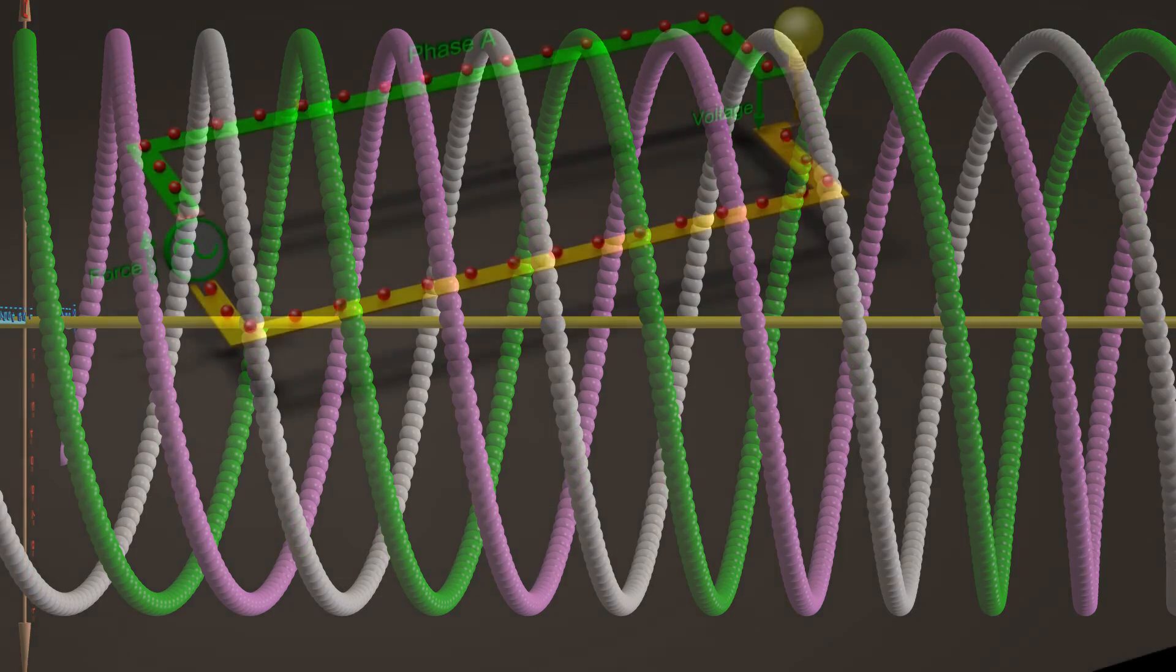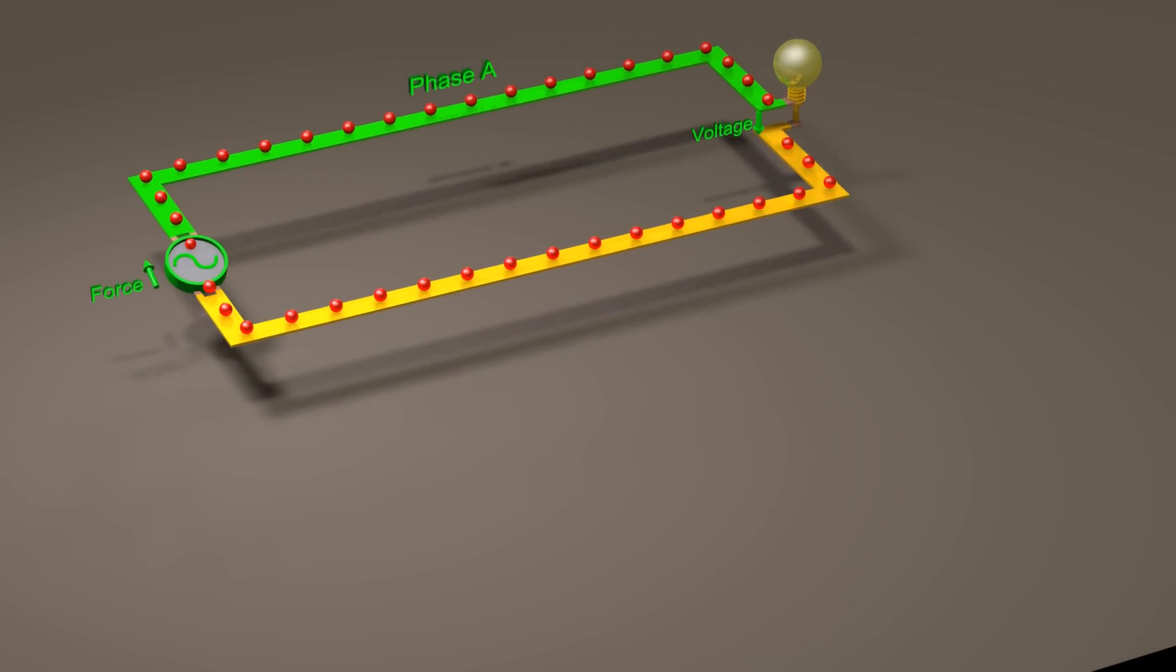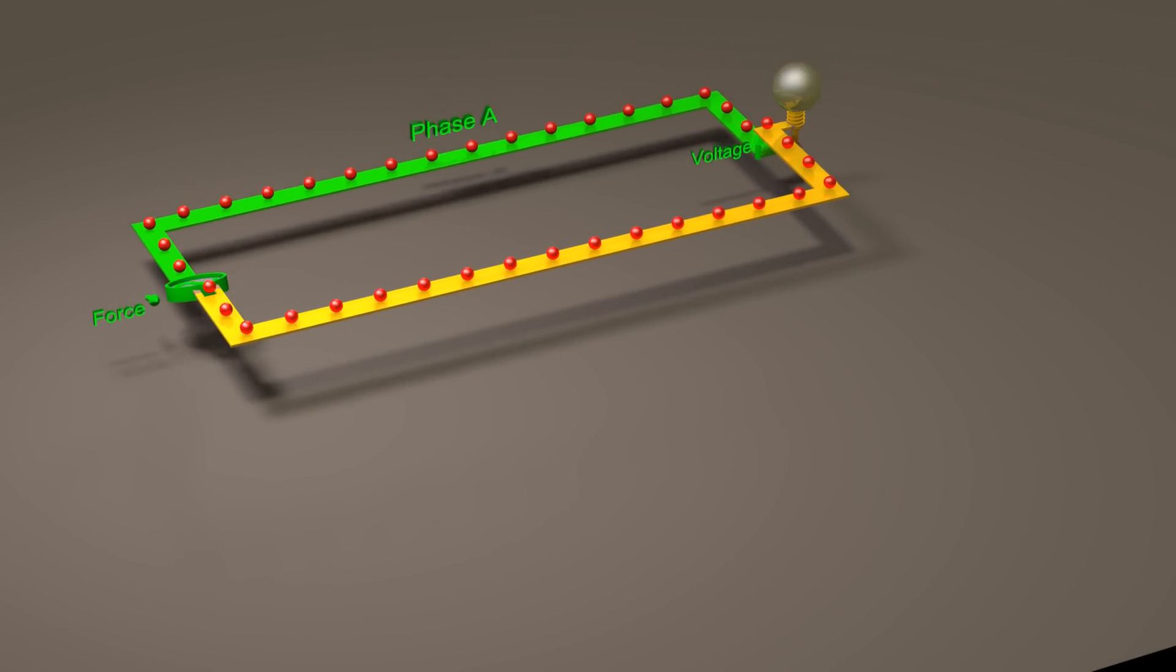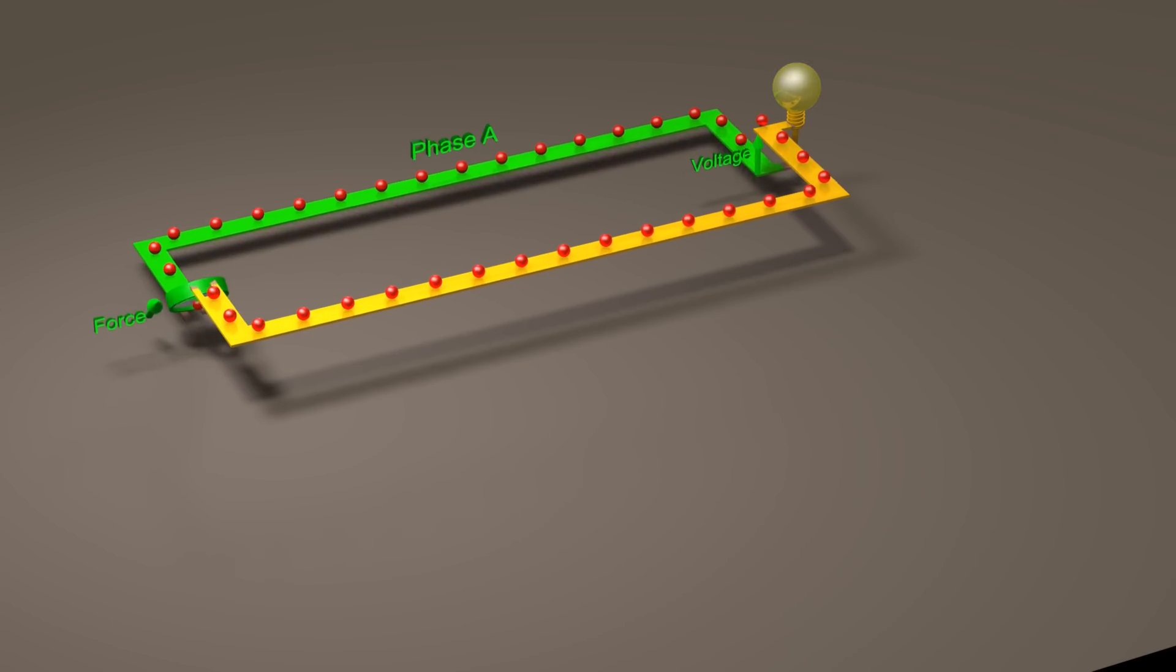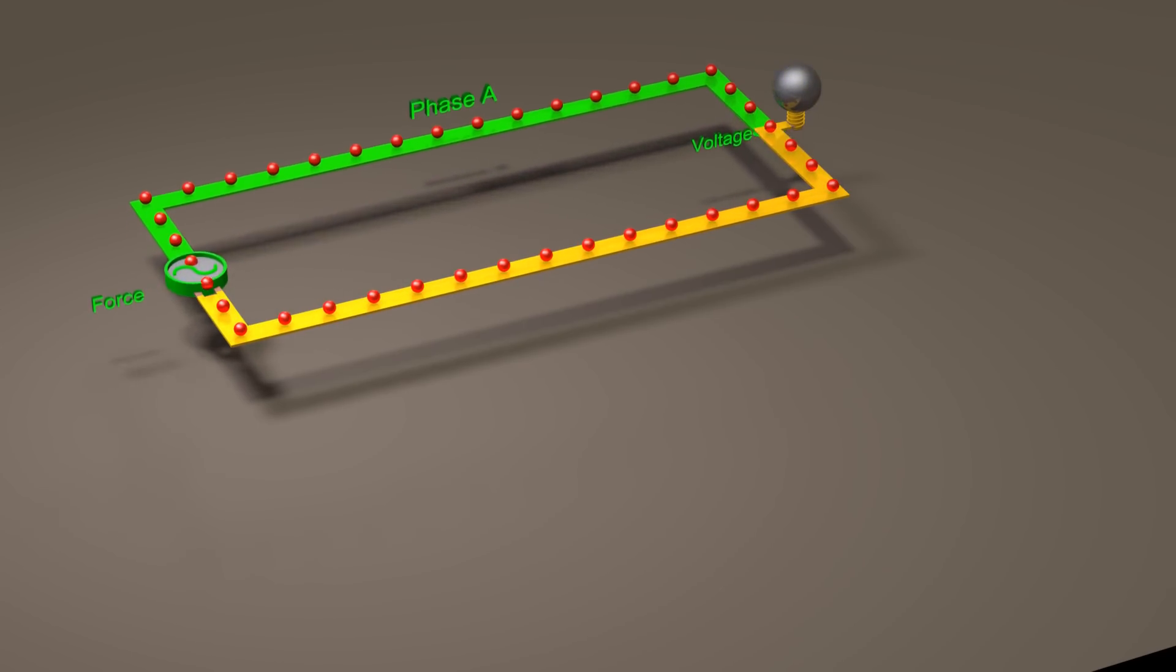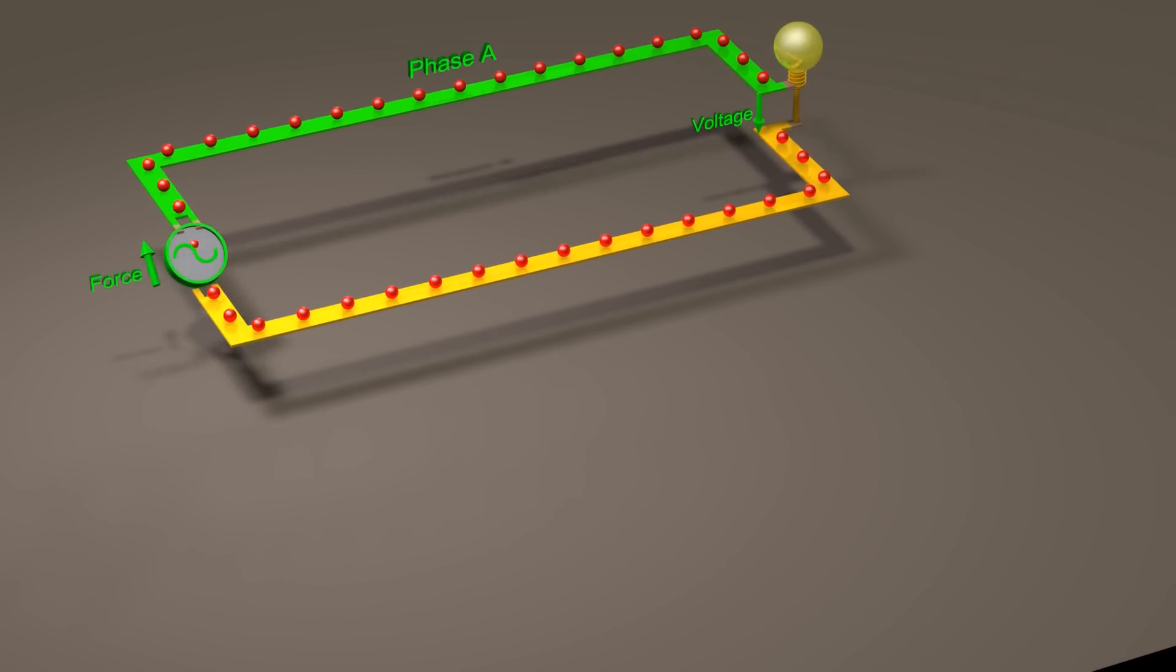We can think of each phase as an AC voltage source and a lightbulb. Each lightbulb represents several homes.